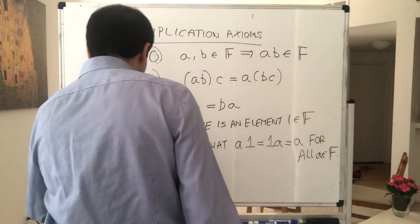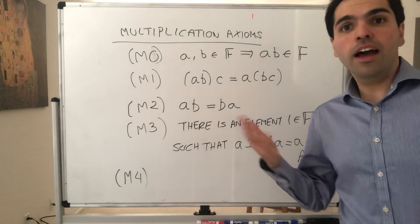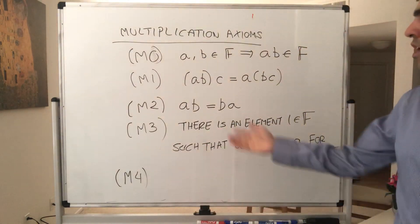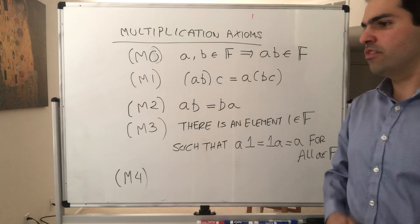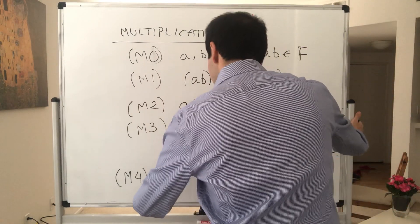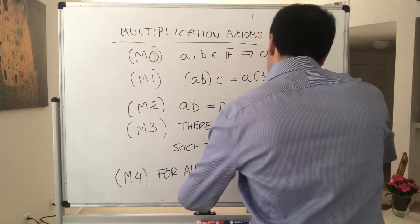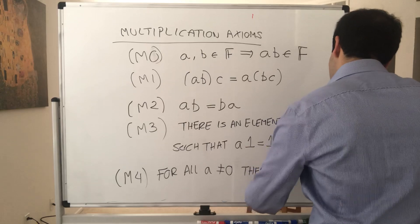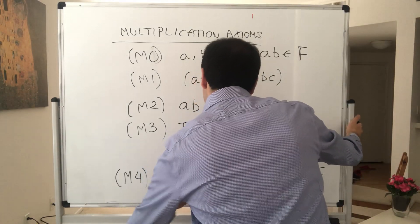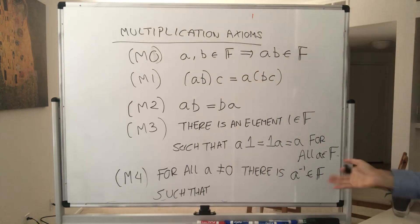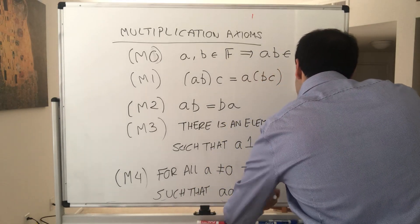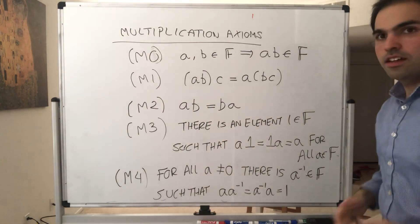And last but not least, there's something called one over a. But again, be careful. So even for real numbers, one over zero doesn't exist. So in other words, we require a to be non-zero. So for all a non-zero, there is a inverse in F such that, well, what is one over a? It just means if you multiply it by a, you get one. So a times a inverse equals a inverse times a equals one.